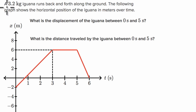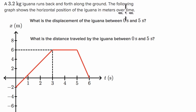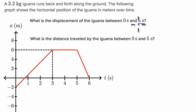This first question says a 3.2 kilogram iguana runs back and forth along the ground. The following graph shows the horizontal position of the iguana in meters over time. The first question is: what is the displacement of the iguana between zero seconds and five seconds? It's not saying between zero and six seconds — it's saying between zero and five seconds. Pause the video and see if you can figure that out.